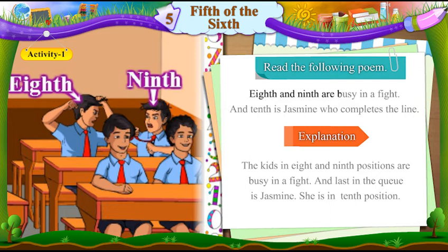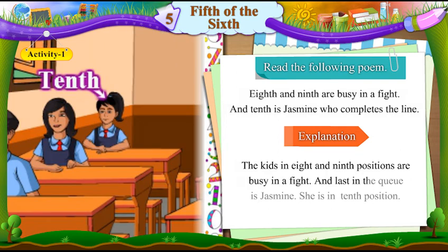Eighth and ninth are busy in a fight. And tenth is Jasmine who completes the line. The kids in eighth and ninth positions are busy in a fight. And last in the queue is Jasmine, who is in tenth position.